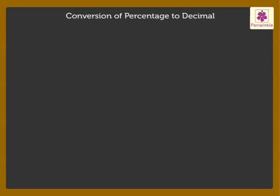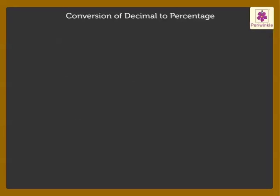Now let's see the conversion of a decimal number to a percentage. To convert a decimal number to a percentage, multiply it by 100 and then write the symbol of percent.